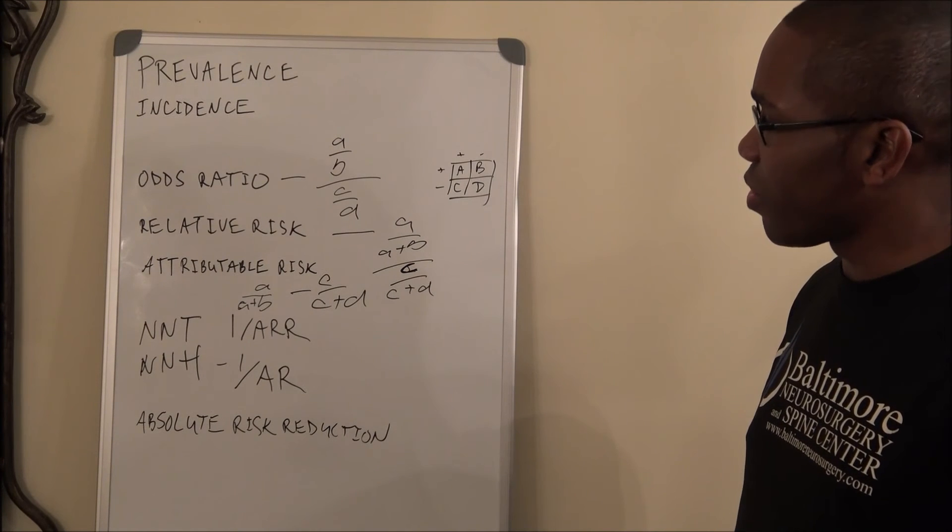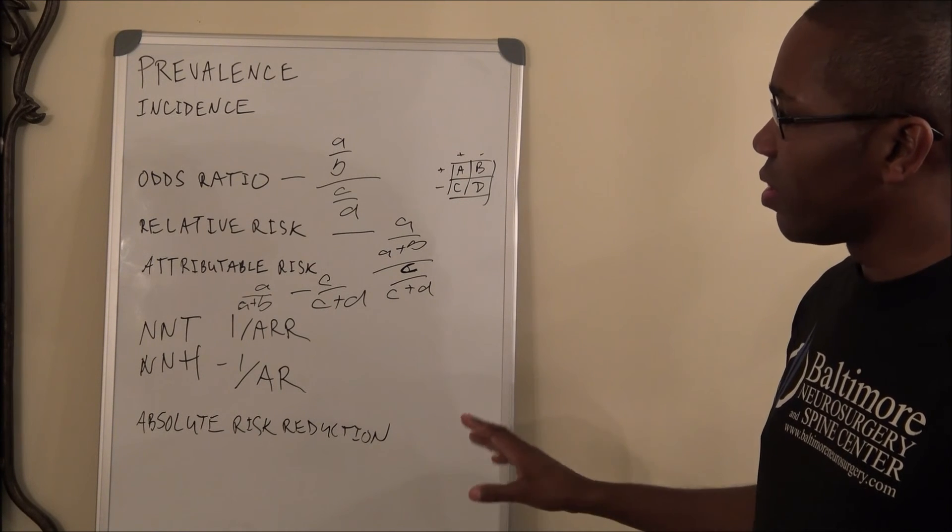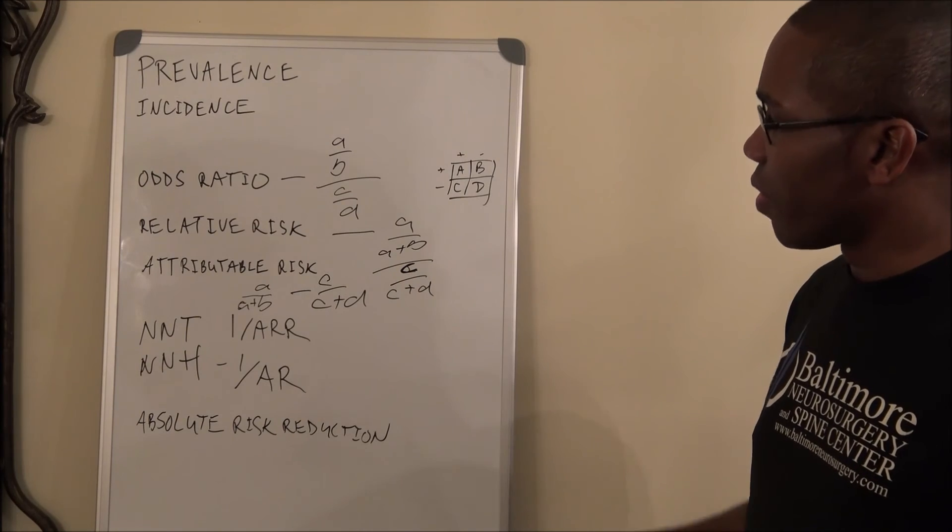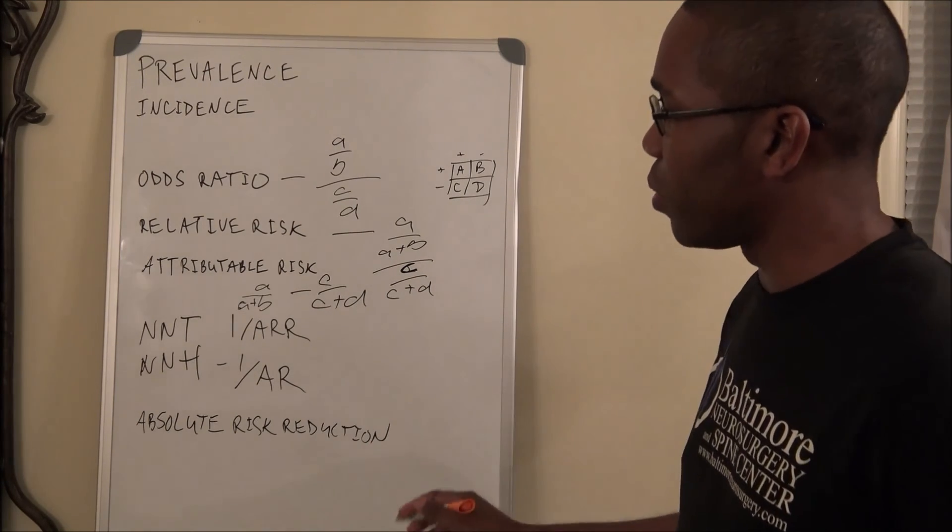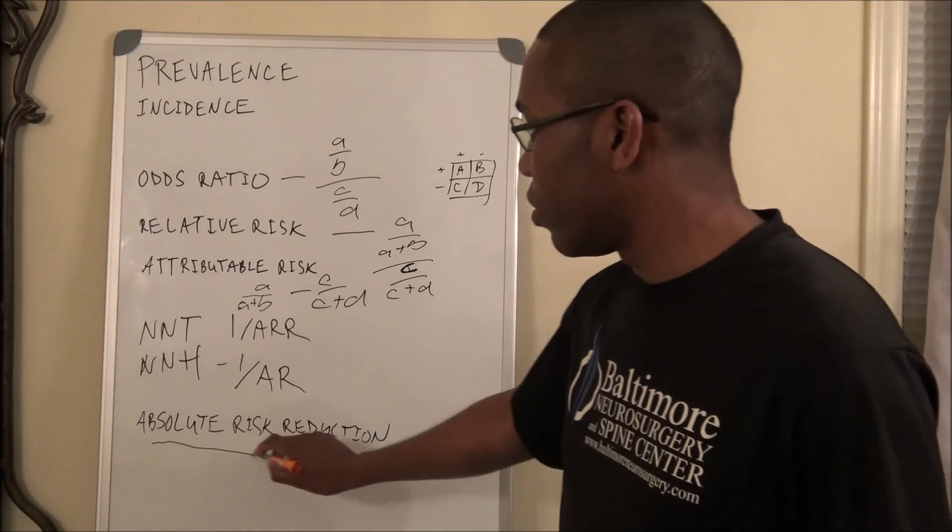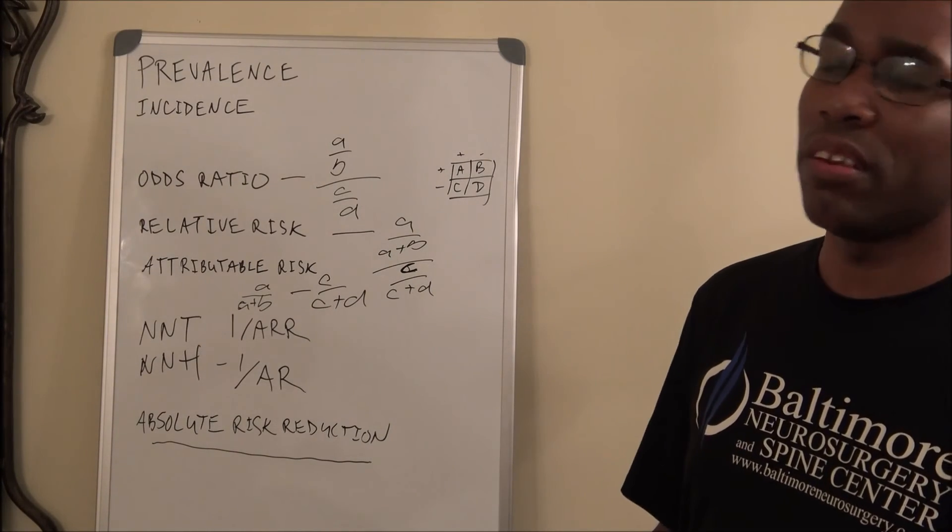Number needed to treat, you're going to have one over, not attributable risk, but absolute risk reduction. And that number is normally given to you.